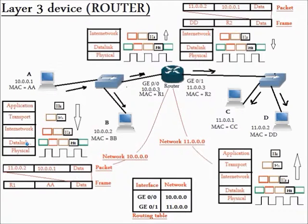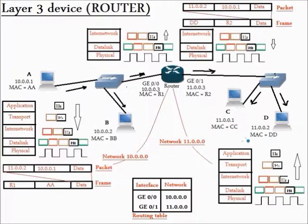So this packet will be sent to the data link layer. Let's take a look at the data link frame. In the data link frame, we will see that the destination MAC address is R1, which is the MAC address of the router's interface, and the source MAC address is AA, which is the MAC address of source computer A. Why did computer A put the destination MAC address as the router's interface MAC address R1, and not as the destination computer's MAC address DD? This is because the data link function is to transmit the data between two nodes in the same network, so the destination MAC address must be in the same network as the source computer. Therefore, computer A put the destination MAC address equal to R1, which is the MAC address of the router's interface that exists in the same network as the source computer.